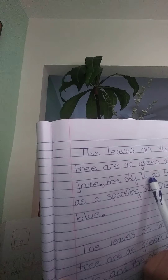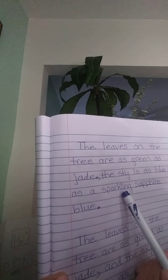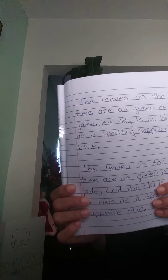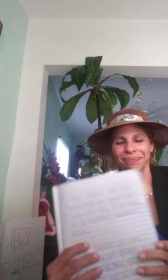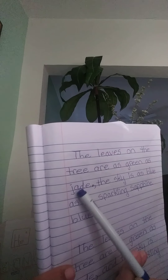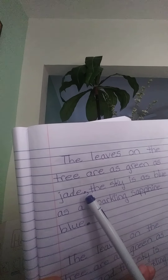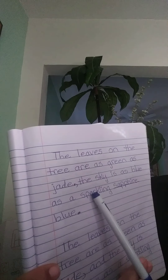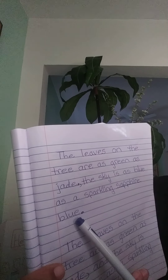The sky is as blue as a sparkling sapphire blue. Sapphire is a very intense blue, a very intense color. Let's look at our semicolon again: The leaves on the tree are as green as jade — semicolon — and the sky is as blue as a sparkling sapphire blue.